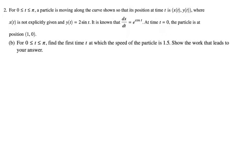Let's take a look at part B. For 0 to pi, find the first time t at which the speed of the particle is 1.5. Show the work that leads to your answer. So speed is the magnitude of velocity. So square root of dx dt or x prime squared plus dy dt or y prime squared, and then that's going to have to be equal to 1.5.